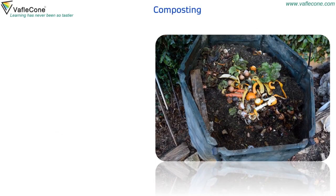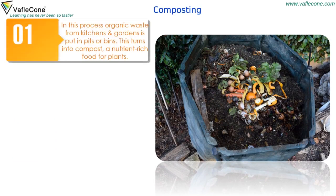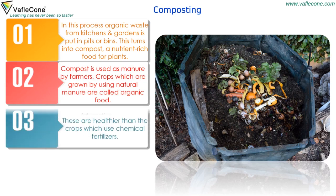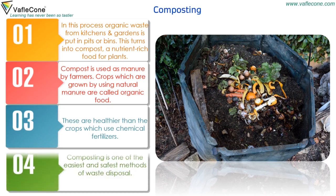Composting: in this process, organic waste from kitchens and gardens is put in pits or bins. This turns into compost, a nutrient-rich food for plants. Compost is used as manure by farmers. Crops grown using natural manure are called organic food and are healthier than crops which use chemical fertilizers. Composting is one of the easiest and safest methods of waste disposal.